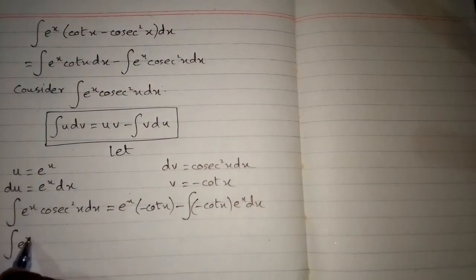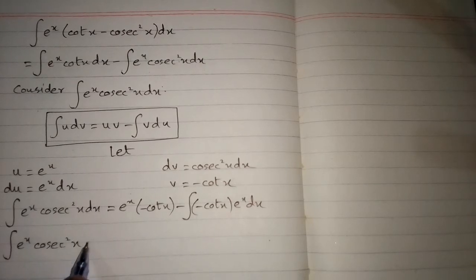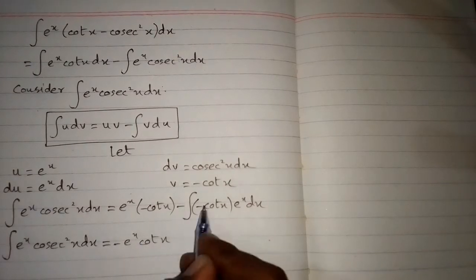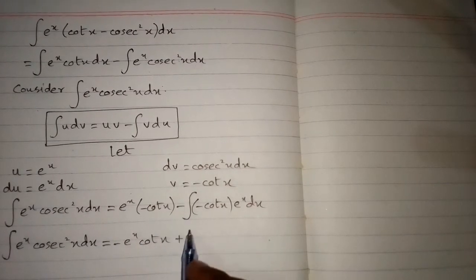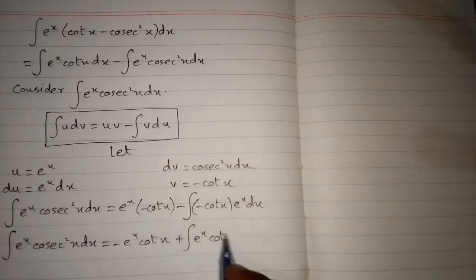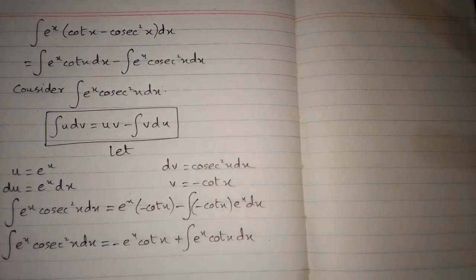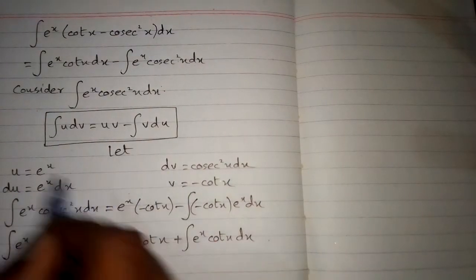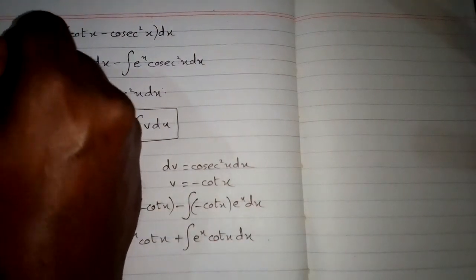After simplifying we get minus e to the power x cot x plus integral of e to the power x cot x dx. We will consider the original integral as i.